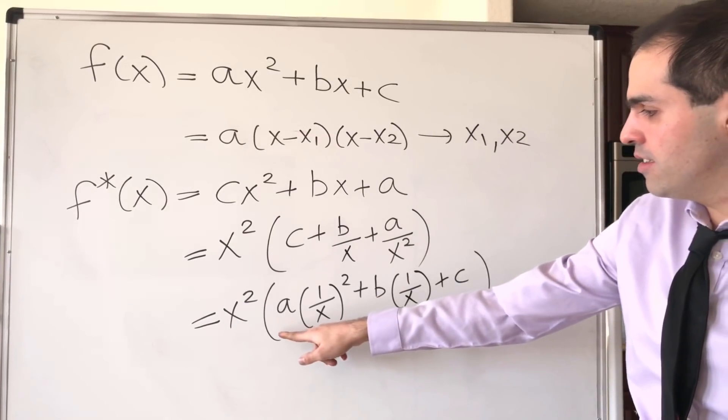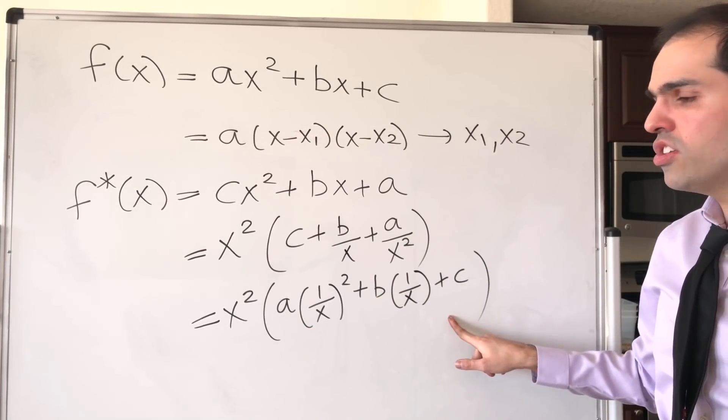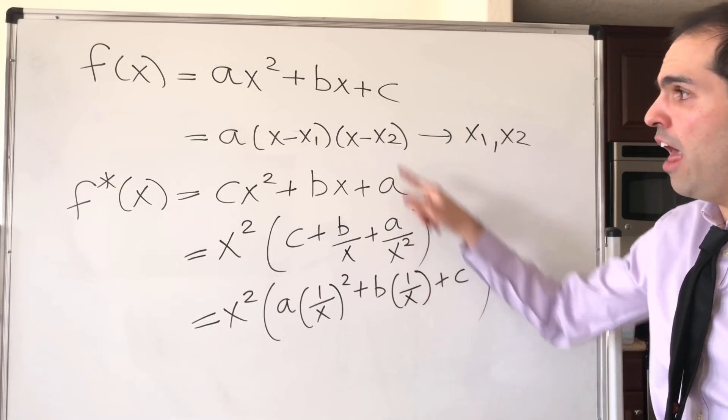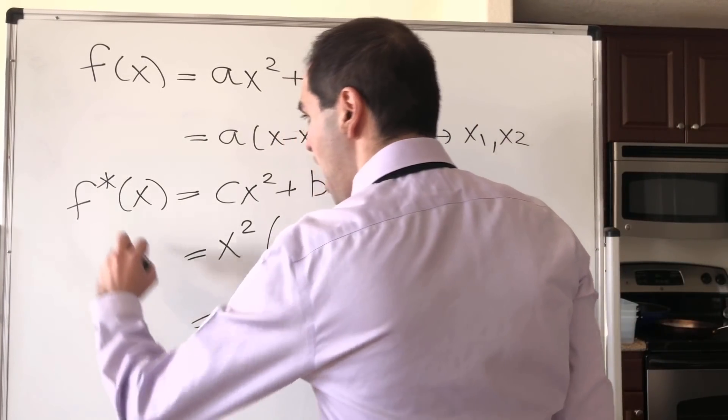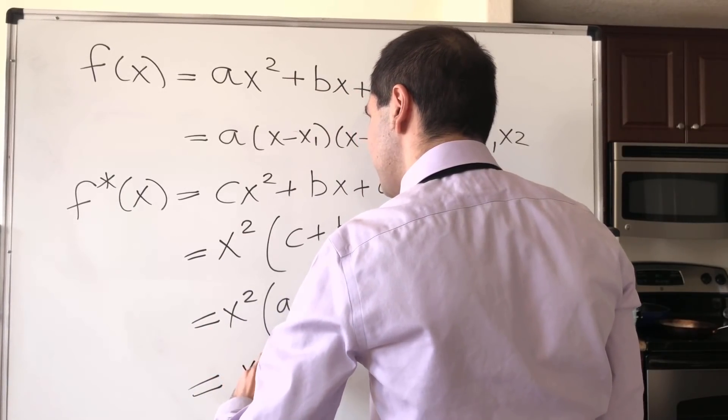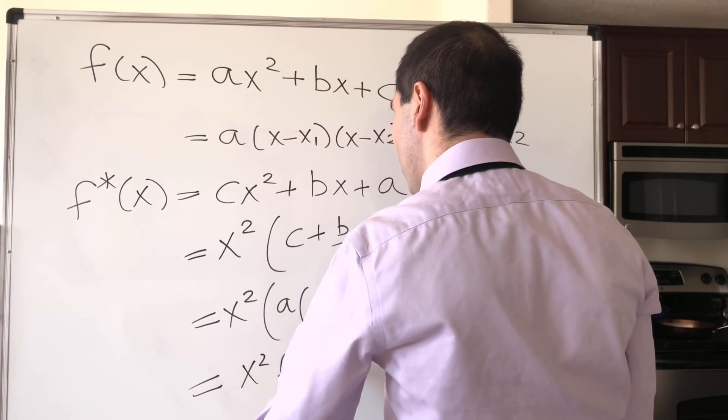But notice this junk here is just our original polynomial, f, evaluated at 1 over x. So in fact, f star is simply x squared times f of 1 over x.